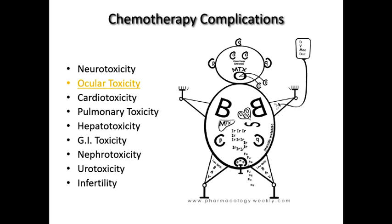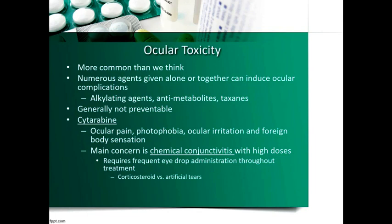Ocular toxicity — on chemo man we see C's with an A inside, representing pupils, for cytarabine (ara-C). Cytarabine can cause ocular toxicities because it is secreted through the tears. With high doses, it coats the conjunctiva, causing inflammation and a chemical conjunctivitis. The best way to avoid this is to routinely flush the eyes with artificial tears, or give dexamethasone drops to reduce inflammation.